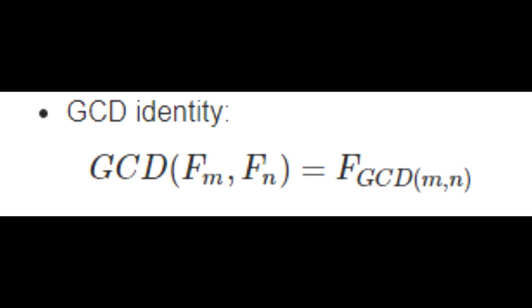If I just take the GCD of the mth term and the nth term of the Fibonacci sequence, that number is going to equal to the GCD of individual m and n, and that term is the answer to the GCD. That's pretty crazy.